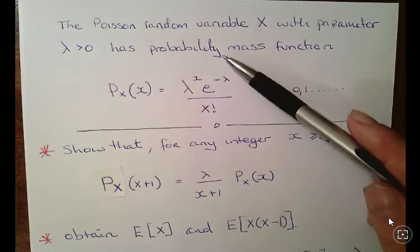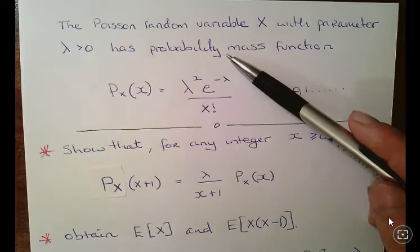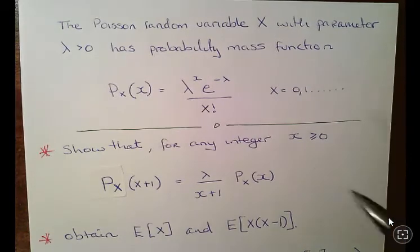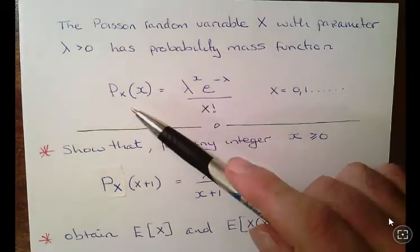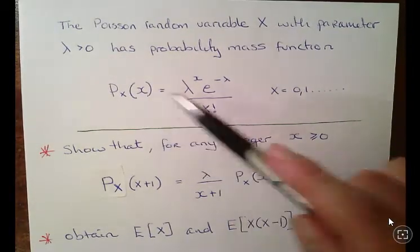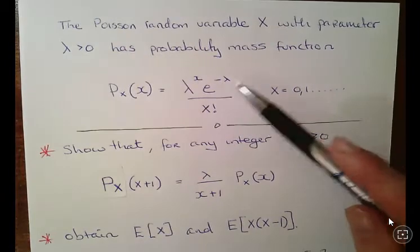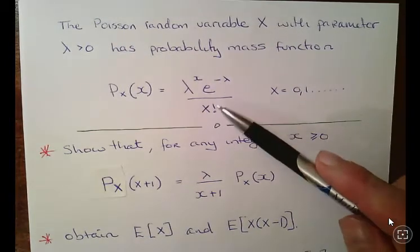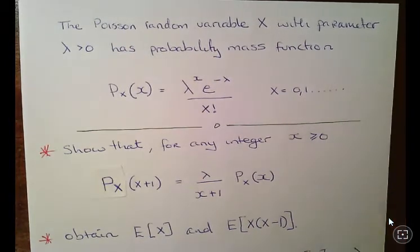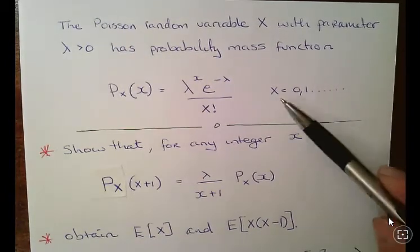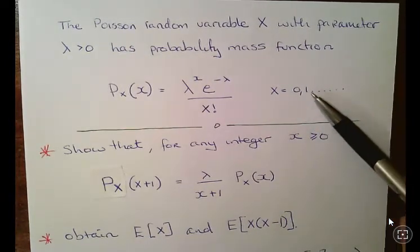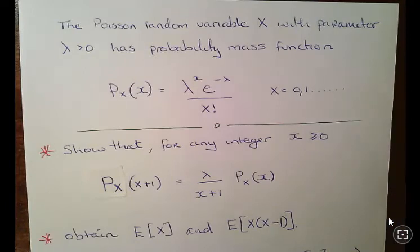It has a probability mass function as follows: P_X(x) is equal to lambda to the power of x times e to the minus lambda over x factorial, for x equal to 0, 1, 2, and so on.